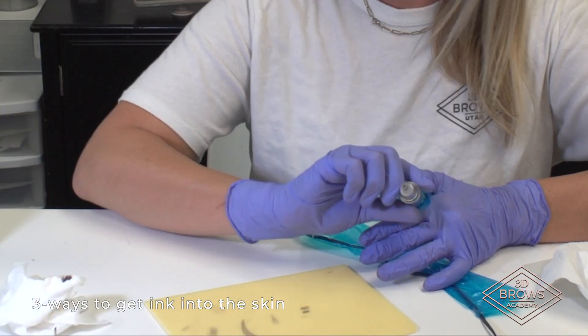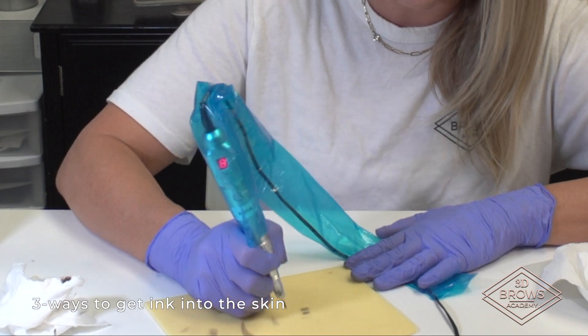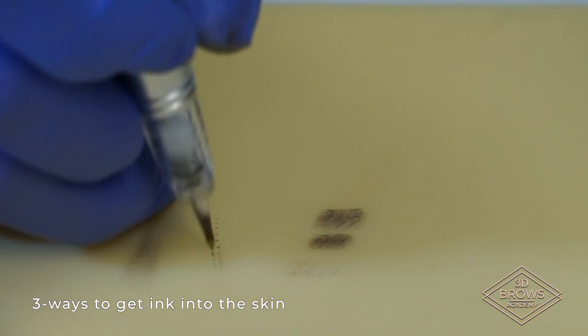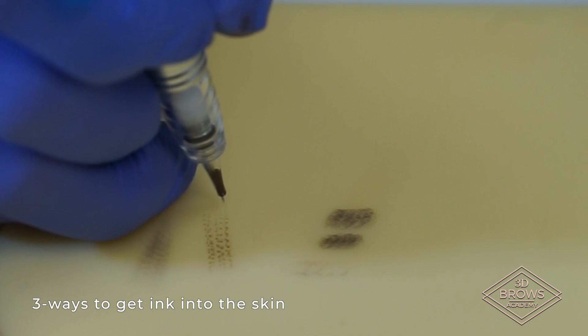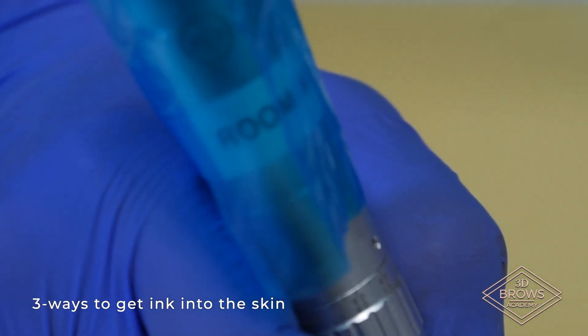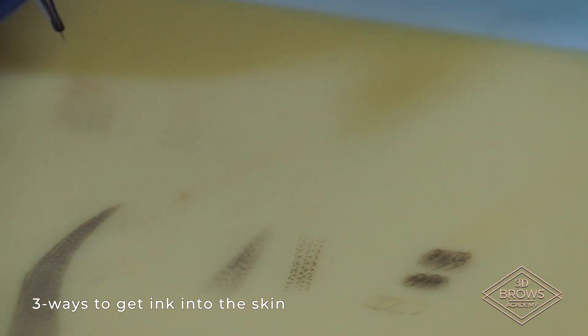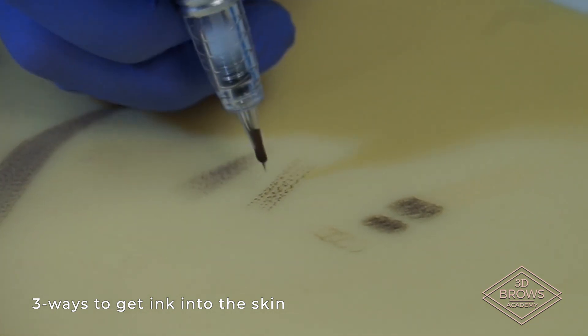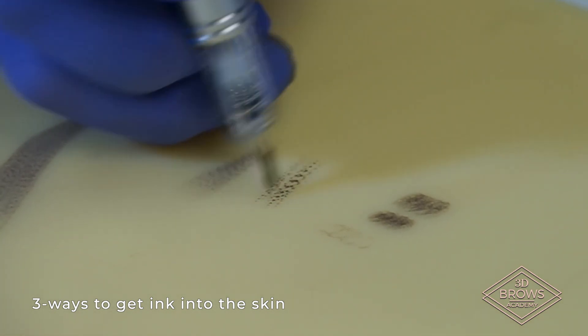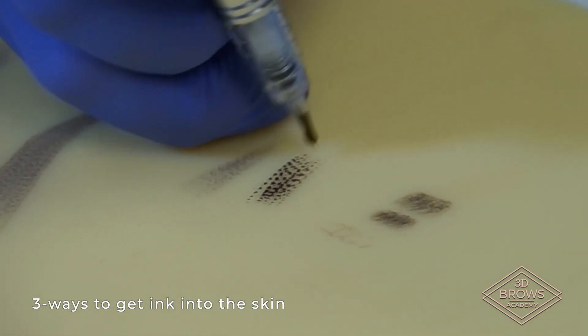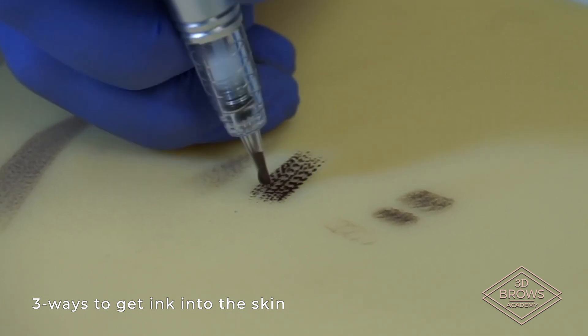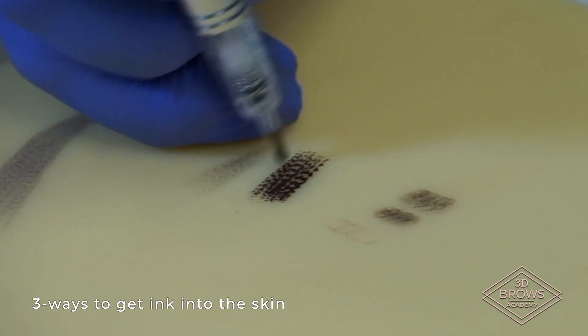Next, you have your whip shading, which we just talked about, your pendulum. So you're going to whip towards yourself, although your hand movement is back and forth. Needles are only touching the skin when I'm pulling towards myself.